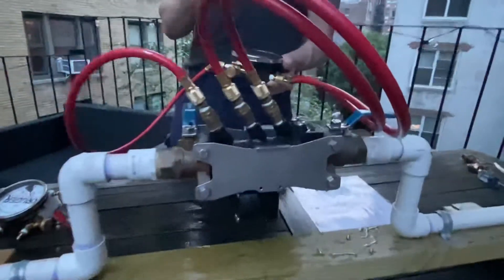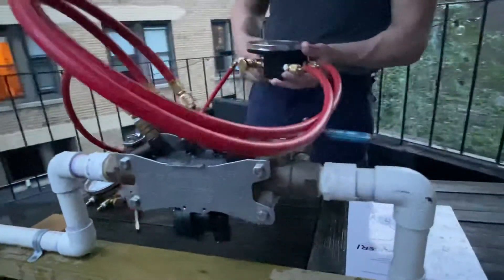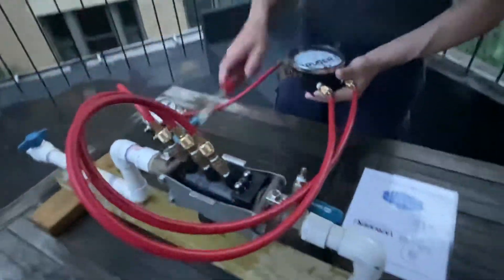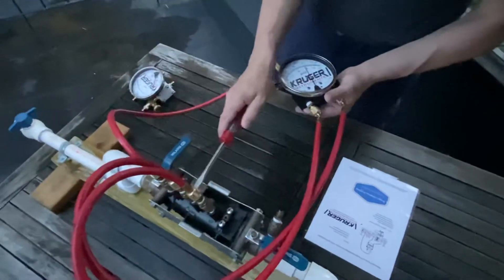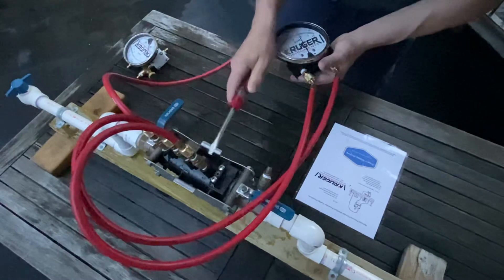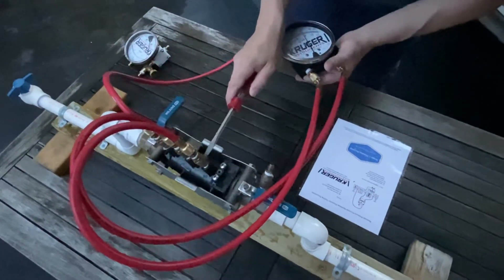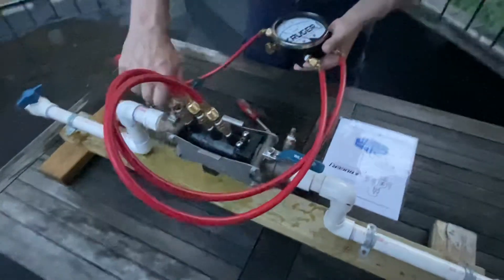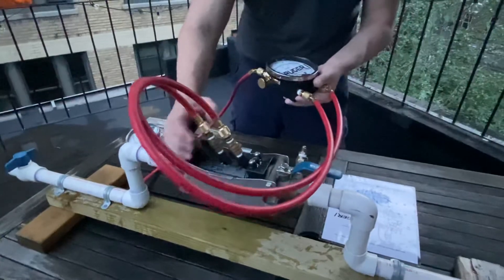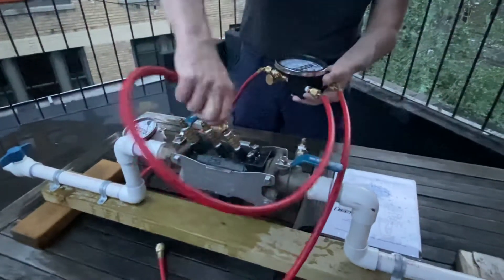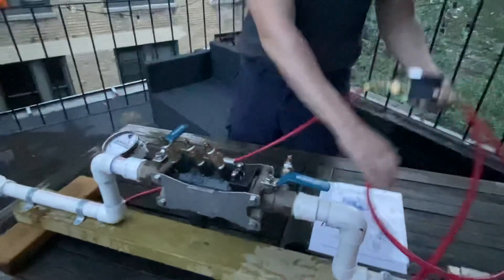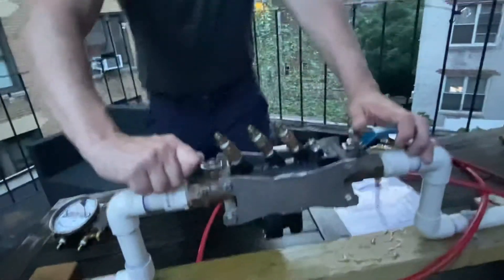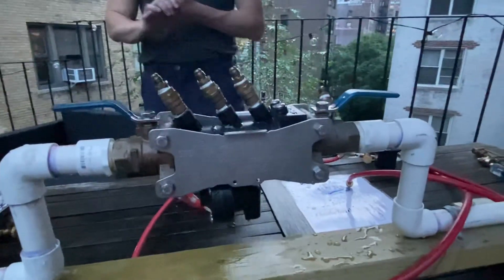So those are the three tests. You got relief valve opening point, check valve two against back pressure, and check valve one differential pressure. So now you're done. Close all test cocks, remove all equipment, and then open shut off valves.